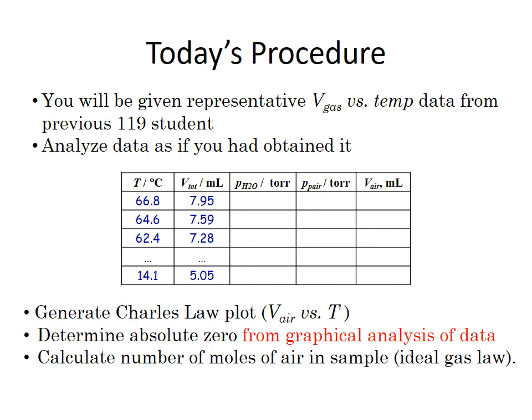Once you have all of that data, you will generate a Charles Law plot V air versus temperature. You will determine absolute zero from a graphical analysis of that data. So you're going to fit it to a straight line, extrapolate it backwards until the y-intercept is zero, and back out what absolute zero is. You'll also note that the report sheet is going to ask you to calculate the number of moles of air in the sample. If you're not sure how to think about that, I would advise you to think about the ideal gas law.